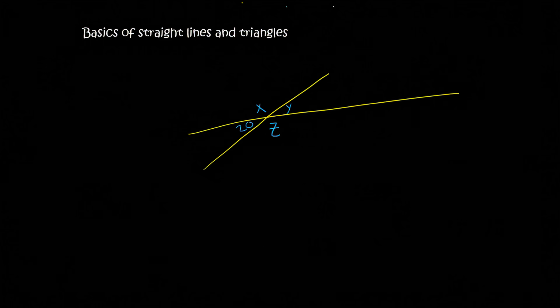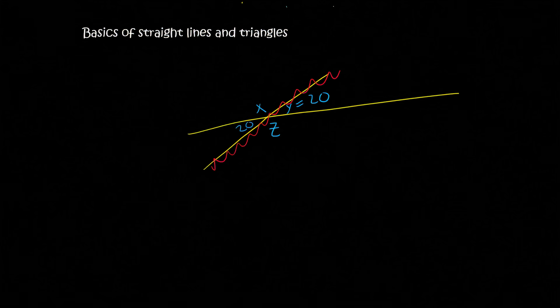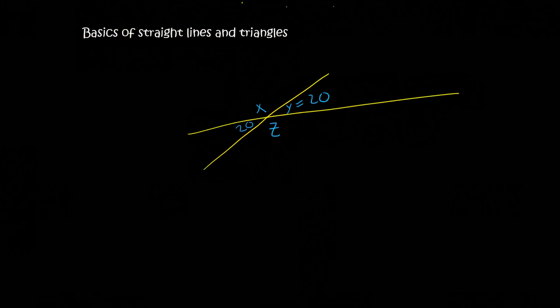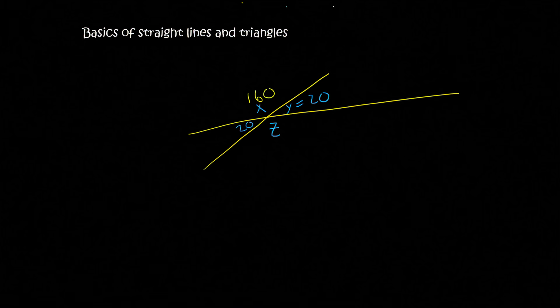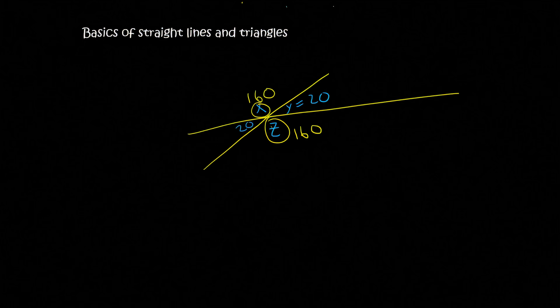Here's a practice question — see if you can work out what X, Y, and Z would be. There are different ways to do this. I know that Y is exactly opposite the 20 degrees, so I can say that that's 20 because of vertically opposite angles. If I then look at this line over here, I know that the 20 and X should add up to 180, which means X would have to be 160 degrees. Then I know that X and Z are vertically opposite, and so they must be the same — so Z is also 160.